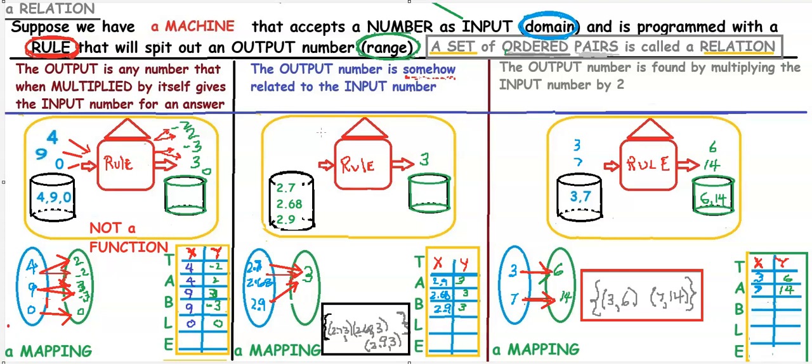The input numbers that go in are from the domain. This first one on the far left has 4, 9, and 0. Those are in the domain group. The range is the numbers that come out. So each of these has a domain and range.